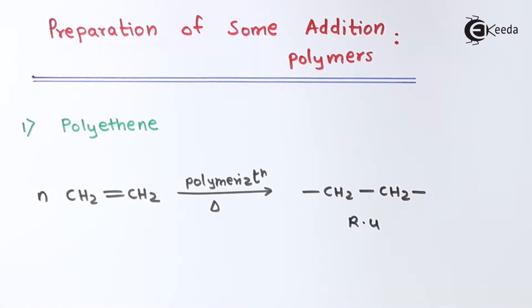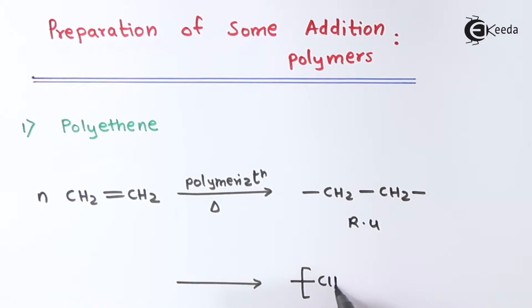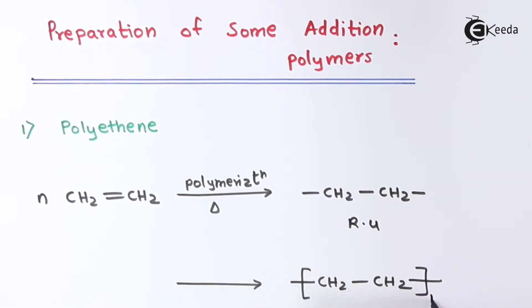Whenever chain termination takes place and a product is formed from the combination of these repeating units, the main product we get is –CH2–CH2– repeated n times, and that is nothing but polyethene. This is the structure of polyethene, prepared from ethene — a simple addition reaction.